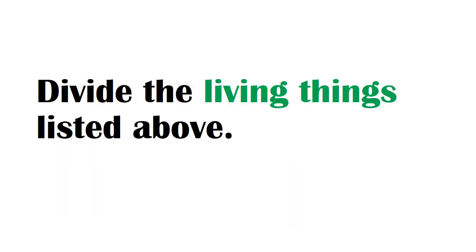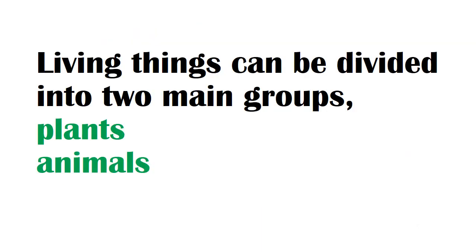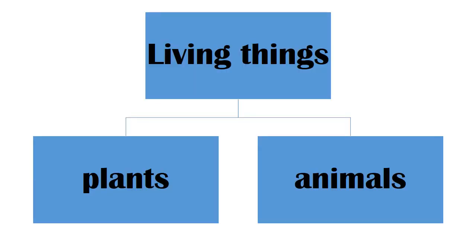Can you divide the living things listed above into groups? Living things can be divided into two main groups: plants and animals. In this hierarchy you can clearly see that living things are categorized into plants and animals.